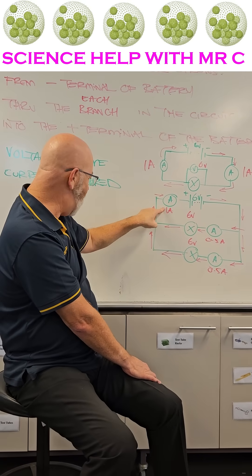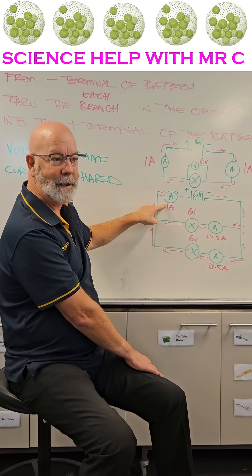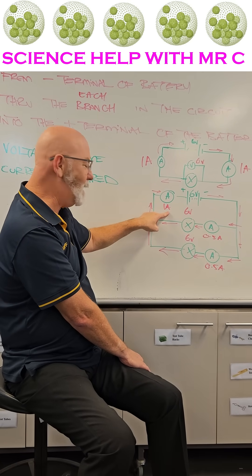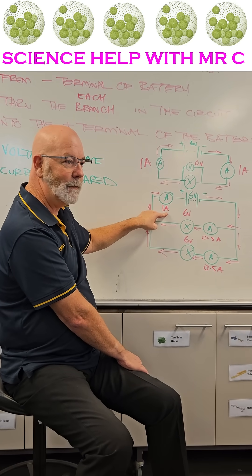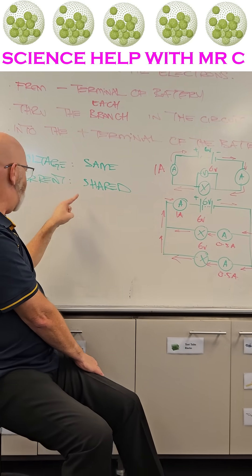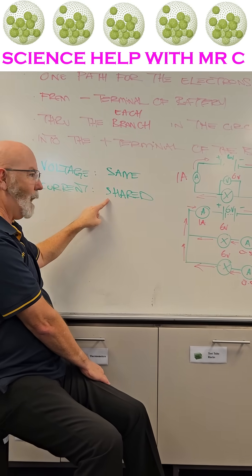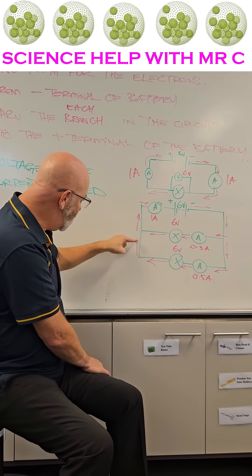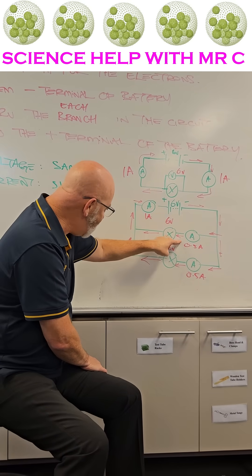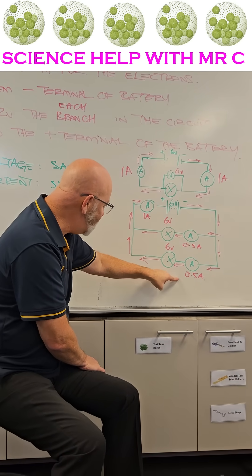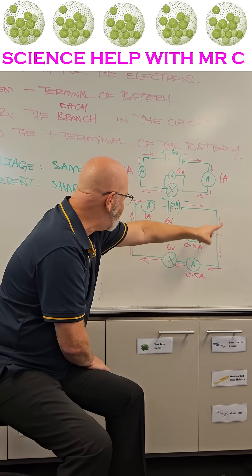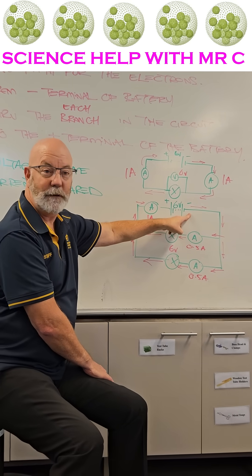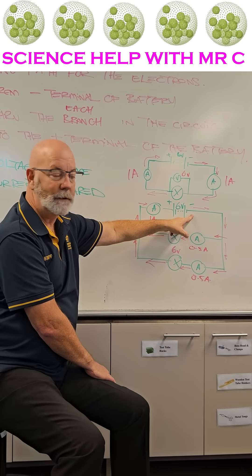Because we have to put the ammeter at the positive terminal and it's reading one amp, we have to share the current. So the current here is one amp. Half an amp is going through each branch and then it goes back to the negative electrode for conventional current.